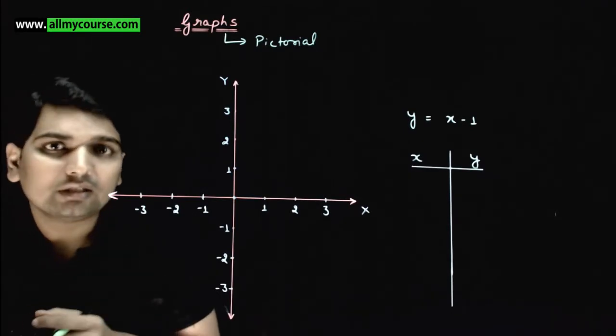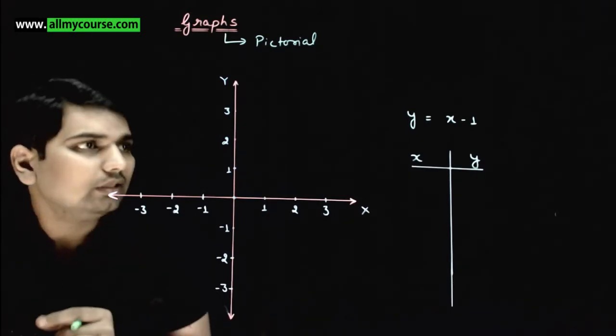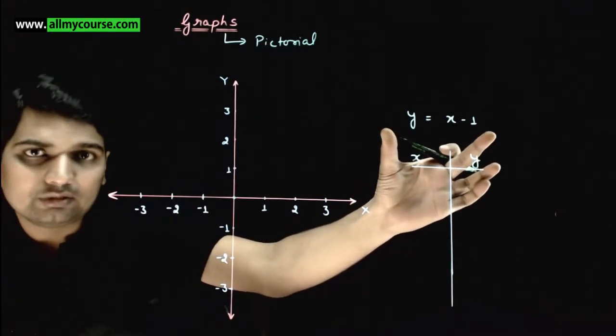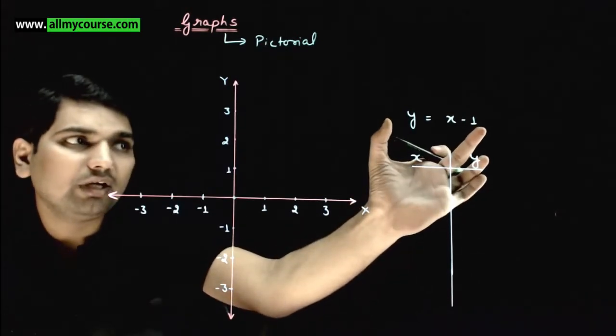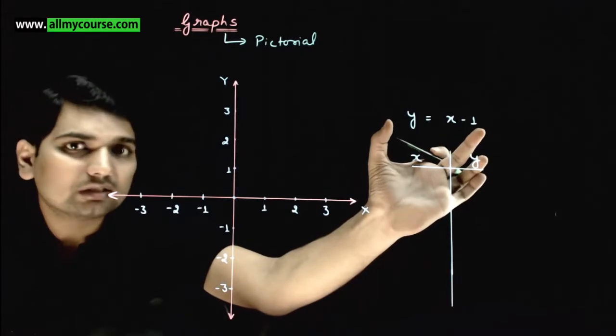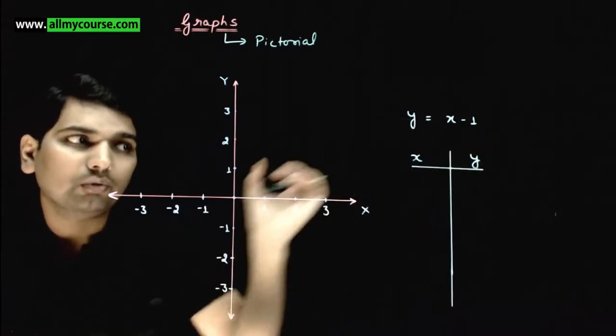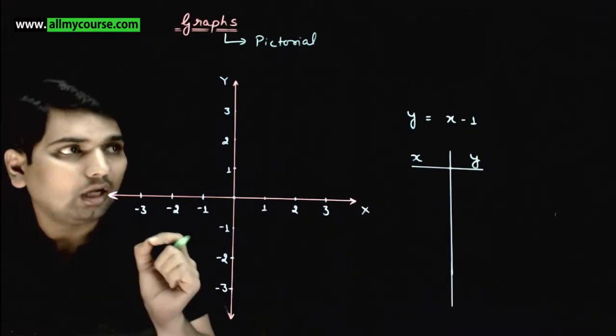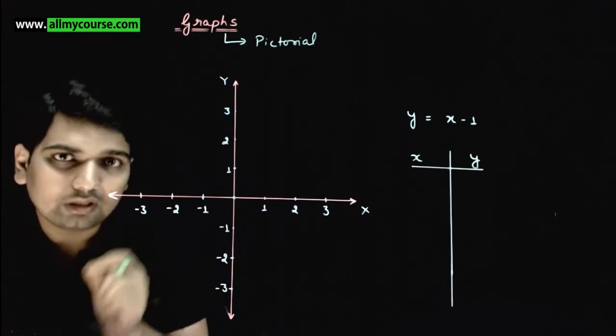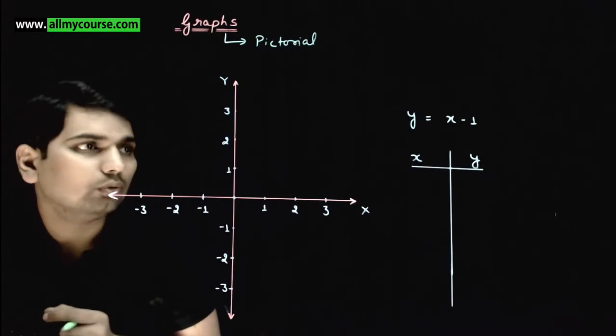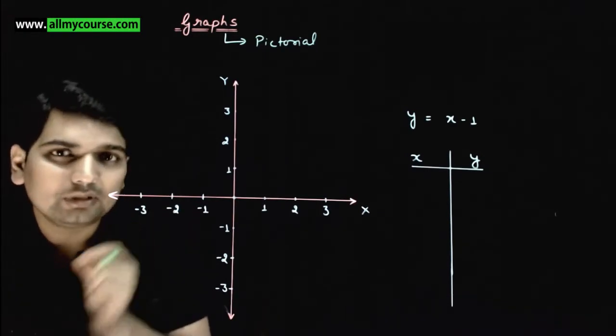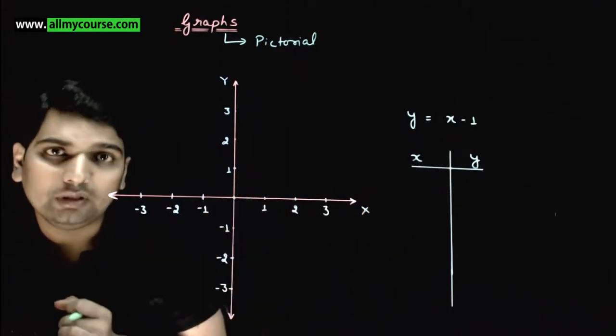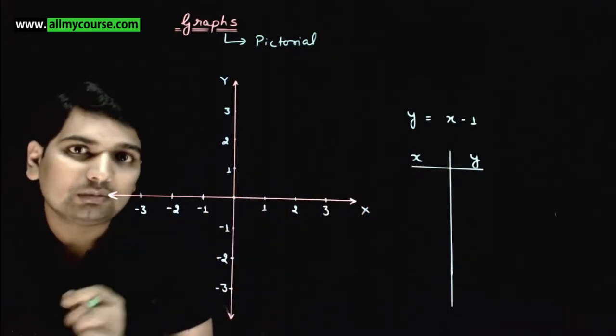How is this graph drawn? To understand this, I've taken a simple example: y equals to x minus 1. I will draw the graph of this function. To draw the graph, since we don't have any tools yet, we're starting from the very basics. The most basic method is to plot different data points between x and y.